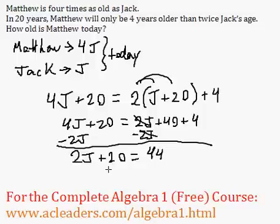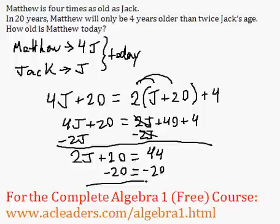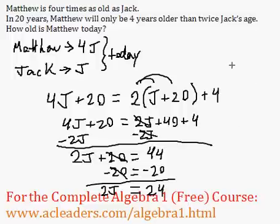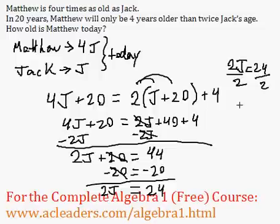Now we can take away 20 from both sides of the equation. And 2J is then equal to 44 minus 20, which is 24. So if 2J equals 24, divided by 2, J is 12.